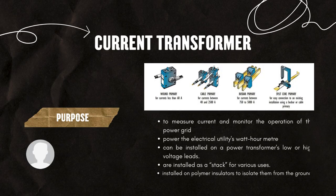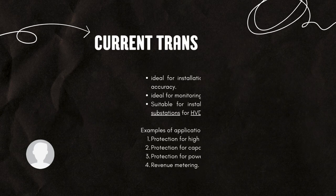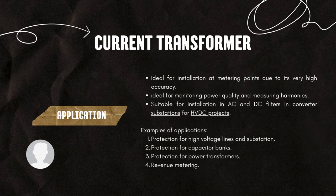CTs are widely used to measure current and monitor the operation of the power grid. They also power the electrical utilities for metering. CTs can be installed on a power transformer at the high voltage side, installed as a standalone unit for various users, and installed on polymer insulators to insulate them from the ground. Applications include protection for high voltage lines and substations, protection for capacitor banks, protection for power transformers, and revenue metering.